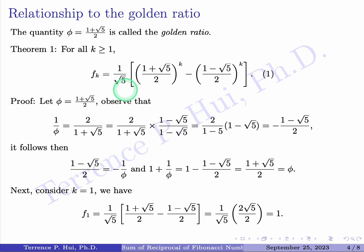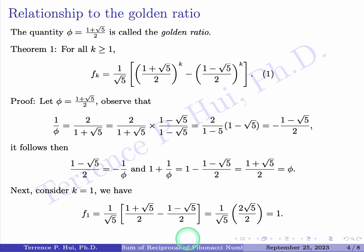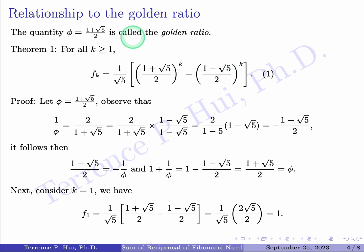Now we prove Theorem 1 by induction. Base case k = 1: plugging in gives F₁ = (1/√5) · [((1 + √5)/2) − ((1 − √5)/2)] = (1/√5) · (2√5/2) = (1/√5) · √5 = 1. This matches F₁ = 1, so the base case is established.